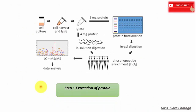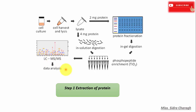Then incubation with a chemiluminescent horseradish peroxidase substrate, and then we expose it to film. Now the first step is extraction of protein. Cell lysate is the most common sample for Western blotting. The protein is extracted from cells by mechanical or chemical lysis, also known as tissue preparation. To prevent denaturing of protein, a protease inhibitor is used, and the concentration of protein is determined by spectroscopy.